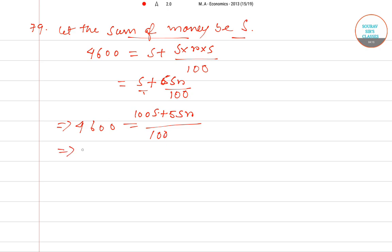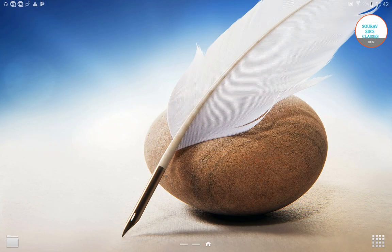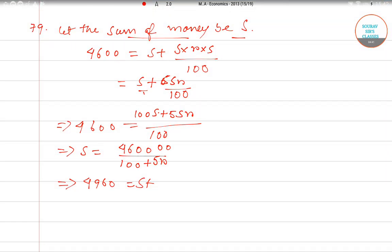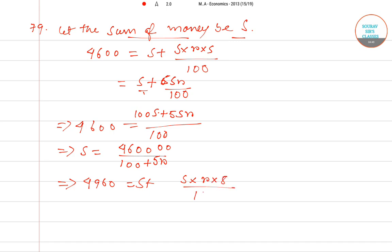From the first equation, S = 460000 / (100 + 5r). Similarly, for the eight-year case: 4960 = S + (S × r × 8) / 100, which gives 496000 = 100S + 8Sr, so S = 496000 / (100 + 8r).